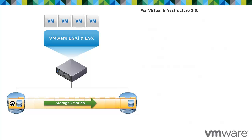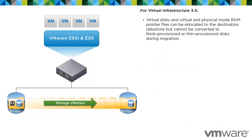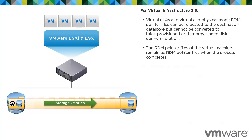For Virtual Infrastructure 3.5, virtual disks and virtual and physical mode RDM pointer files can be relocated to the destination data store, but cannot be converted to thick provisioned or thin provisioned disks during migration. The RDM pointer files remain as RDM pointer files when the process completes.